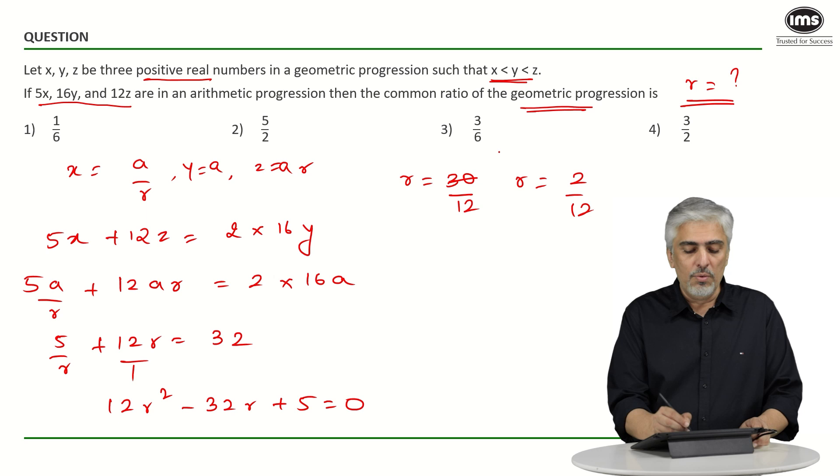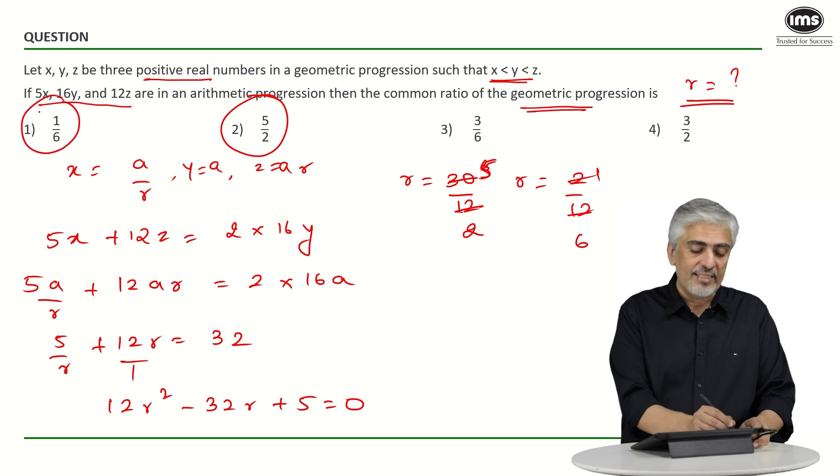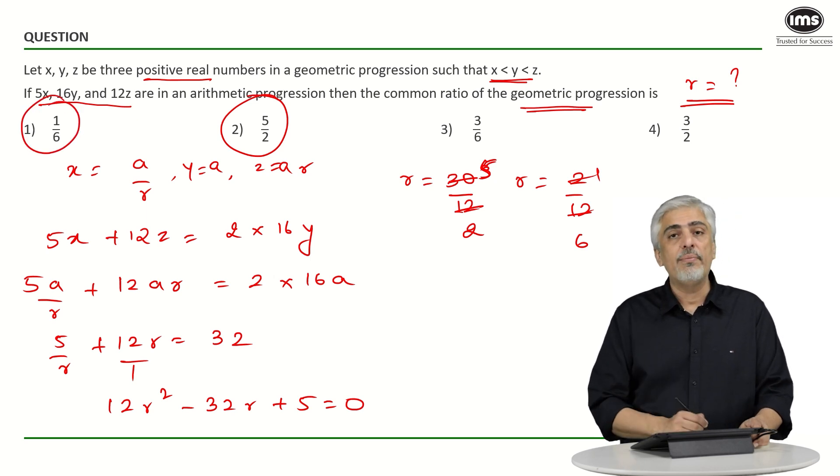So what will you get? r will be 30 divided by 12 or r will be 2 divided by 12. Both the values for r are possible: 5 by 2 or 1 by 6. Which value do I take? Both of them are there in the options also.